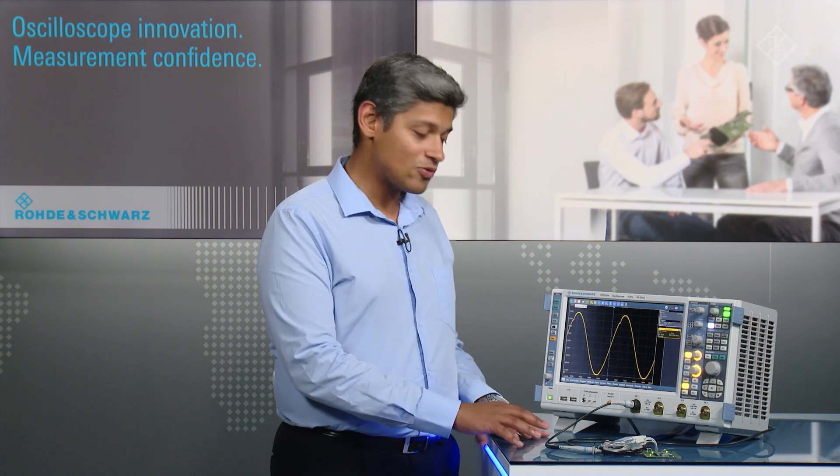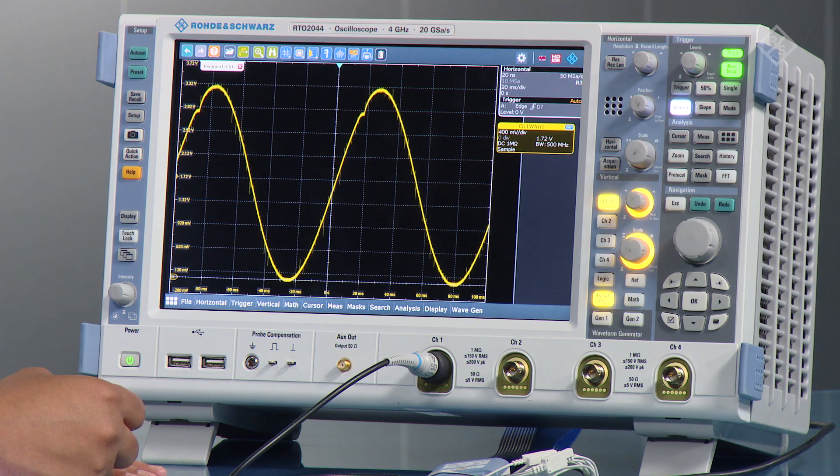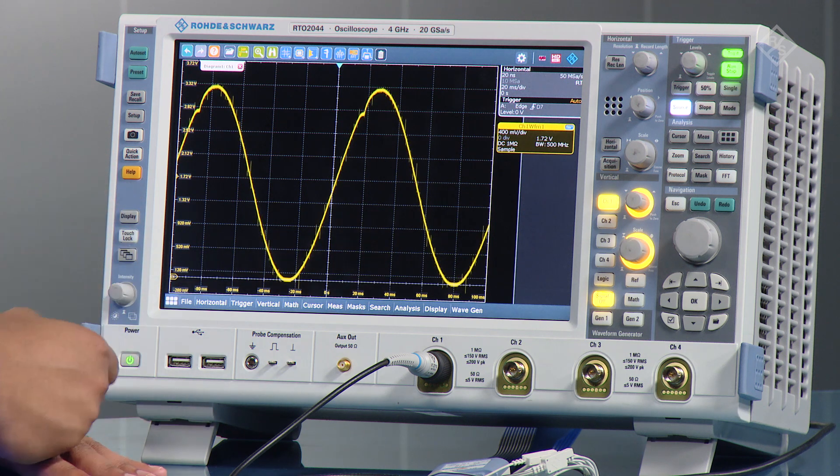So for this example, I've configured the scope to actually probe onto a DAC, a digital to analog converter, and we can see the output of the analog waveform in the main trace here.